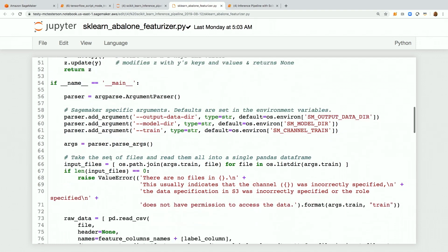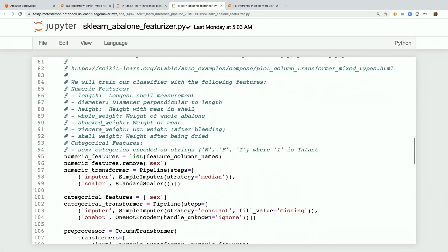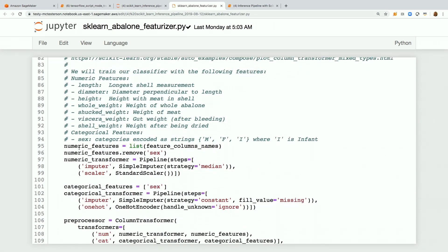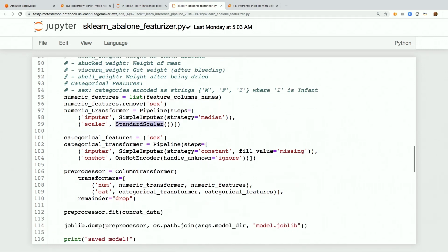We're going to set our arc parser, read through those input files, get that raw data coming in. The numeric features are down here. We're going to set up a scikit-learn pipeline that's going to do two things. First, it's imputing missing values using the median. Then it is scaling the numerical values using the scalar.